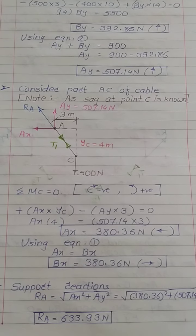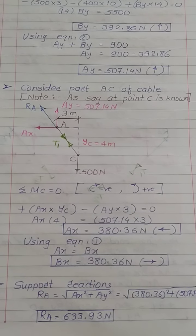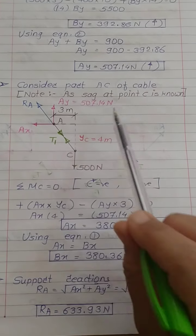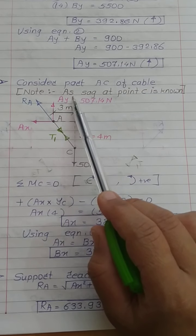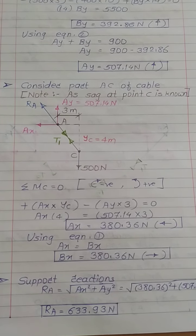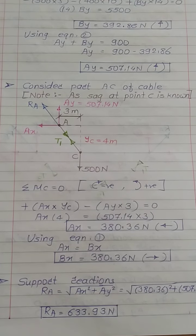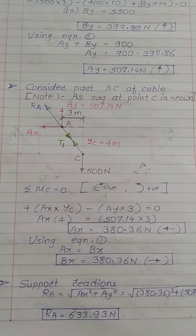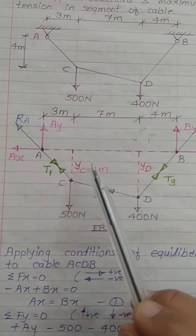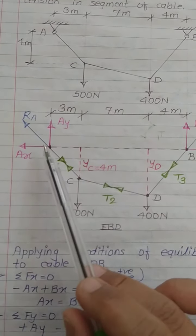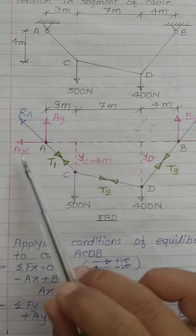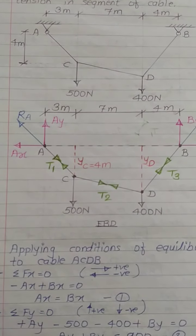To determine Ax and Bx, we must consider a part of the cable and apply another moment equilibrium condition. We must consider the part of the cable where the sag is known — as I explained in my previous video on cable theory. Since we know the sag at point C, yc = 4 m, we will consider segment AC to determine Ax.